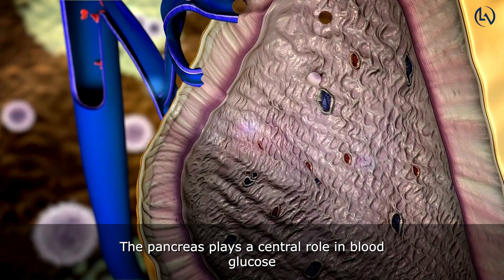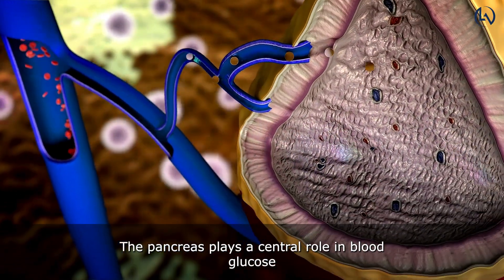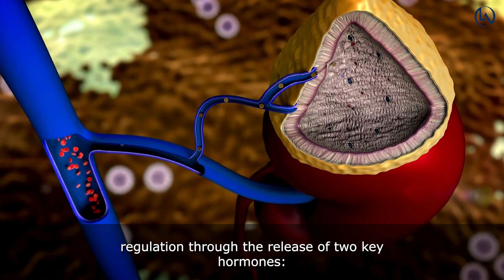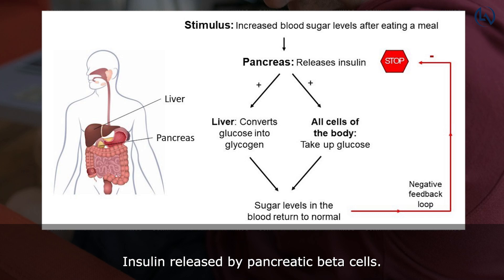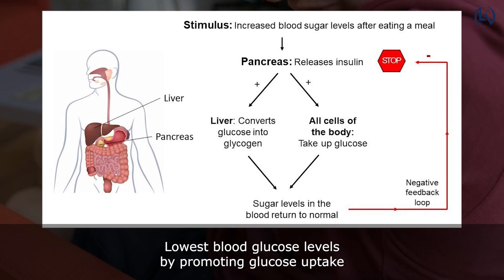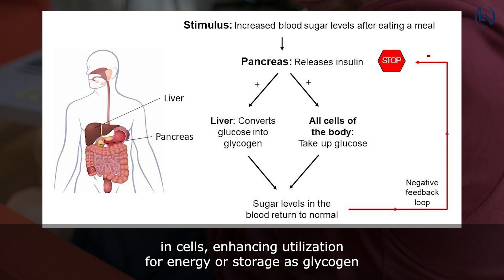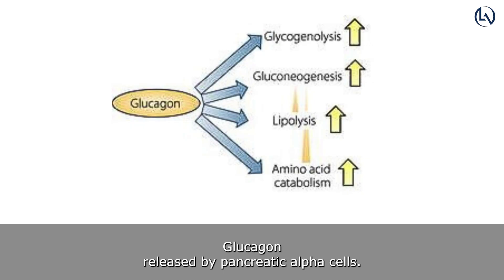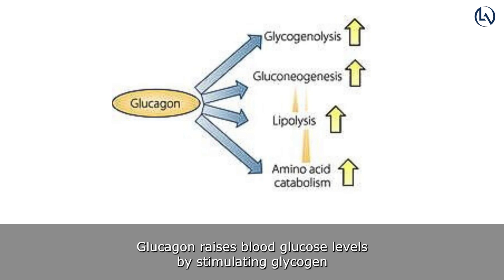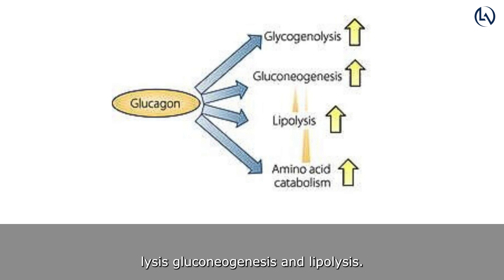Pancreatic Hormones: The pancreas plays a central role in blood glucose regulation through the release of two key hormones. Insulin, released by pancreatic beta cells, lowers blood glucose levels by promoting glucose uptake in cells, enhancing utilization for energy or storage as glycogen, and inhibiting glycogenolysis and gluconeogenesis. Glucagon, released by pancreatic alpha cells, raises blood glucose levels by stimulating glycogenolysis, gluconeogenesis, and lipolysis.